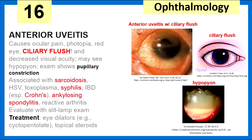Anterior uveitis causes ocular pain, photophobia, red eye, and ciliary flush — redness around the colored part of the eye. Exam may show pupillary constriction. It's associated with conditions such as sarcoidosis, HSV, toxoplasma, syphilis, Crohn's, ankylosing spondylitis, and reactive arthritis. We evaluate with a slit lamp exam and treat with eye dilators such as cyclopentolate and topical steroids.